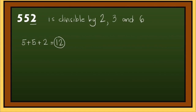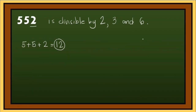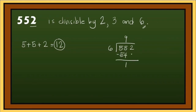So 552 is divisible by 2, 3, and by 6. Now let's prove that 552 is divisible by 6. Let's divide 552 by 6. 55 divided by 6 is 9; 9 times 6 is 54; subtract: 1. Bring down 2: 12 divided by 6 is 2; 2 times 6 is 12; 12 minus 12 is 0. So the answer is 92. This proves that 552 is divisible by 6.